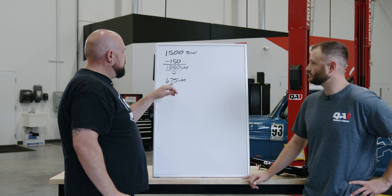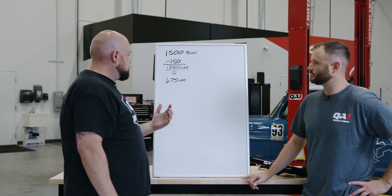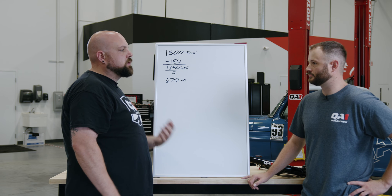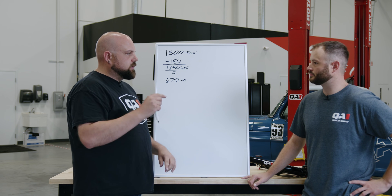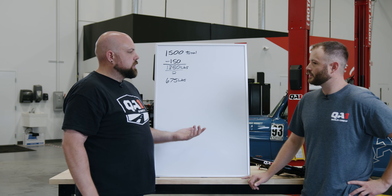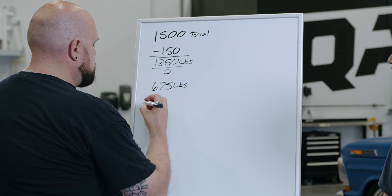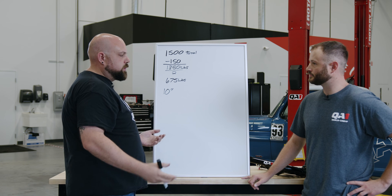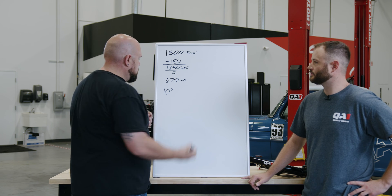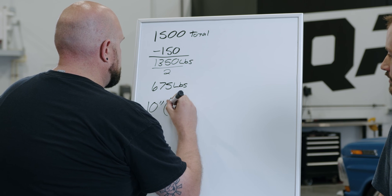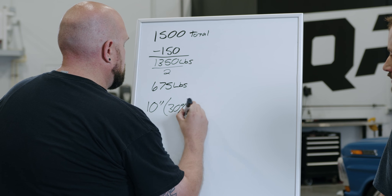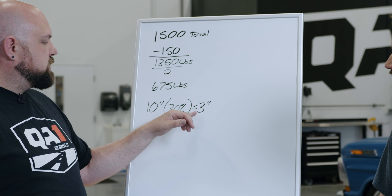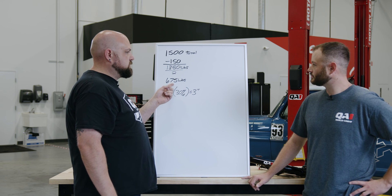Now that we know how much weight is supported by each spring, we need to know what length spring we're going to use. In this scenario, we're assuming you've already worked out your shock and spring length from our other videos. Let's say we need a 10-inch spring, and we want that to compress about 30% — which is typical for a general purpose, high-performance street car. So 10 times 30% equals three inches of compression.